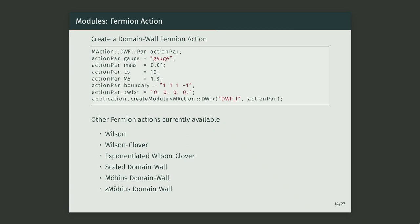For propagator inversions you need a fermion action. Here's an example with a domain wall fermion action where you create a parameter structure filled in a very transparent way — it's clear what each thing is, unlike the functional approach where you just have a list of arguments. The data members tell you exactly what you're constructing. We also support various Wilson, Wilson Clover, and exponentiated Wilson actions, as well as domain wall variants: scaled domain wall, Mobius, and zMobius.